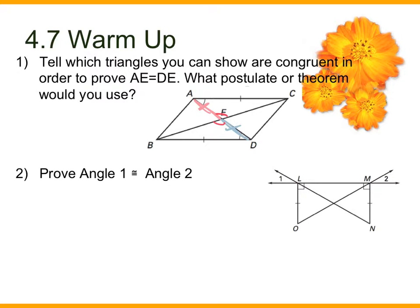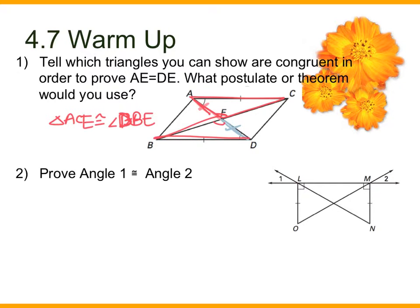So then what two triangles can I prove are congruent from there? Triangle ACE would have to go triangle DBE. What's the reason — which acronym does this fulfill? You've got two angles: the vertical angles and the angles originally given, and then the side originally given. So it would have been angle-angle-side. Then you can say that the corresponding parts are congruent, and the reason would have been CPCTC.